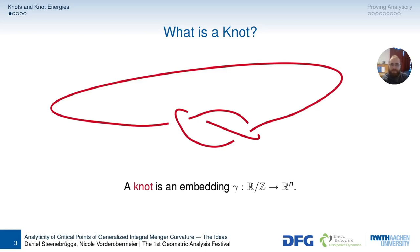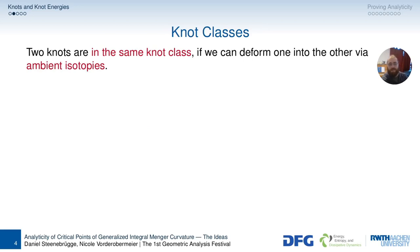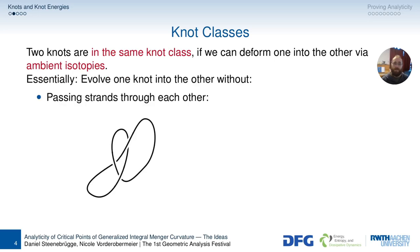And of course we're dealing with math, so let's get rid of reality. Let's get rid of the rope. Now we have a curve in Rn, and this is much simpler, or so we hope. So we're not considered the same. Well, we say that they're in the same knot class, and they are in the same knot class if we can deform one into the other via ambient isotopies.